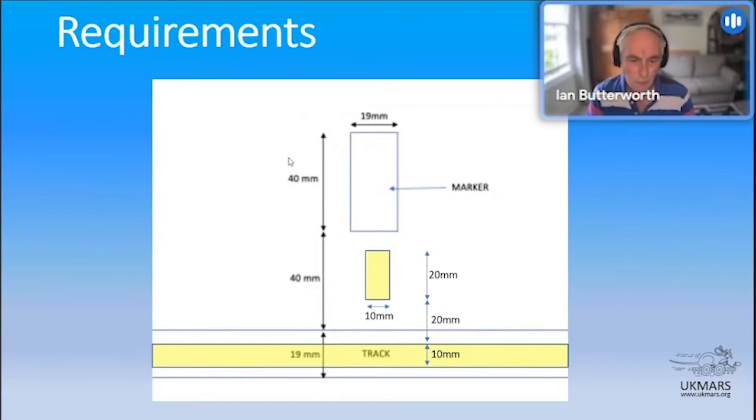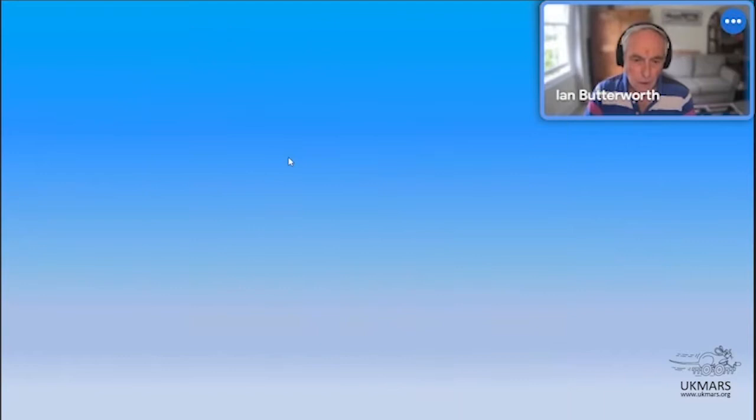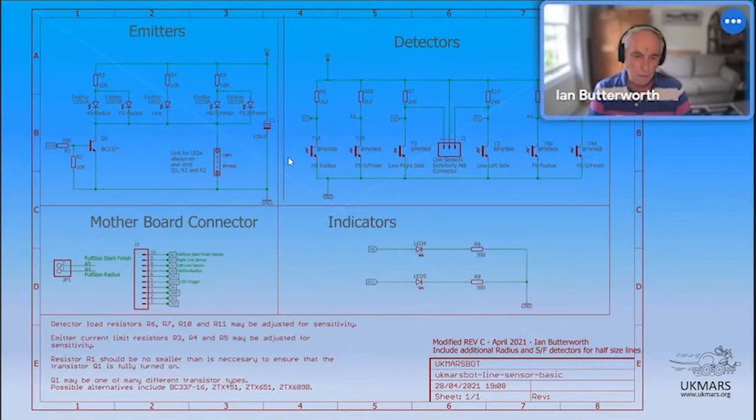This is what happens when you run on a half size line. So you have a 10 millimeter line with a 20 millimeter gap and a 20 millimeter marker. You can see that the radius markers or the start finish markers are in fact not going to be seen by any sensible sensor looking for a full size line marker. Basically, you have got to do something about those markers.